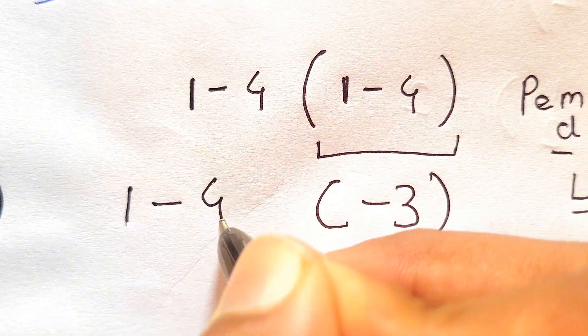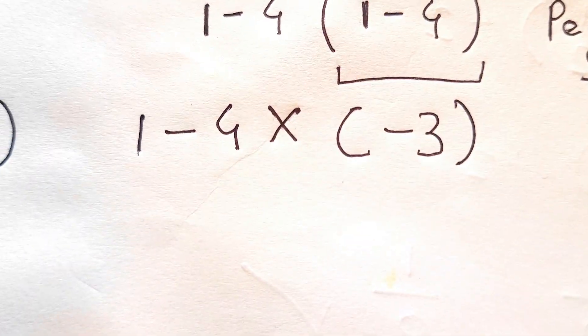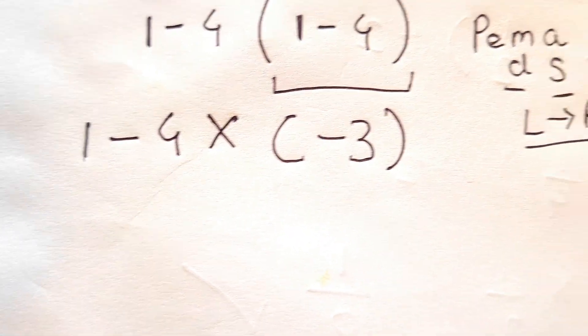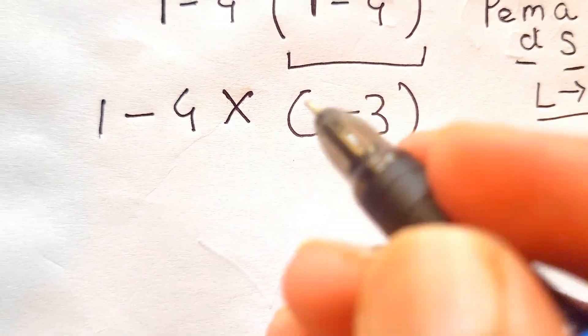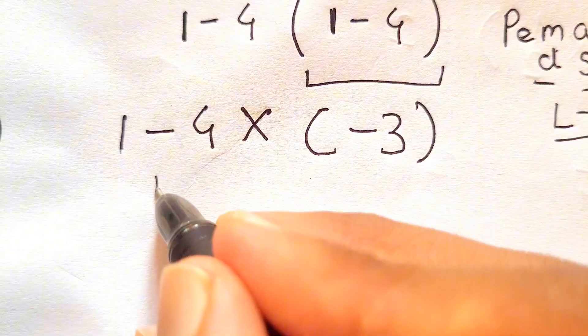Then we need to write the expression as it is to make it more easy: 1 minus 4 times negative 3. Now here in this case we need to do multiplication first instead of subtraction because the priority of multiplication is greater than subtraction.